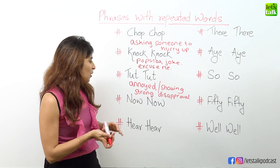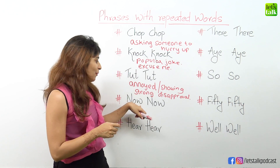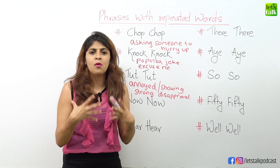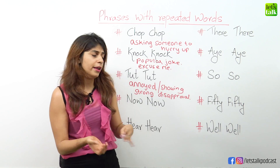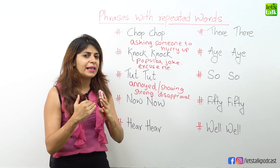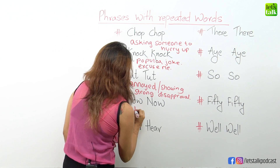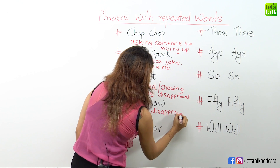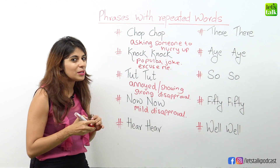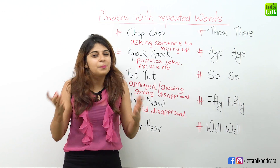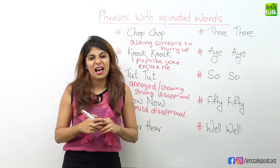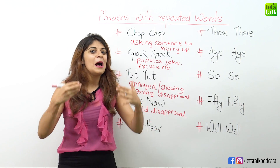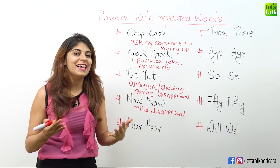Let's move on to another one, which is 'now now'. Now now is also used to express mild disapproval. This one is a milder version compared to tut tut, which is for strong disapproval. When you don't agree with something and you disapprove of something or someone, you can say 'now now, that's not good behaviour' or 'now now, that's not acceptable'. So it's a milder way of expressing disapproval.